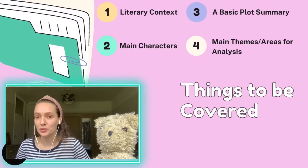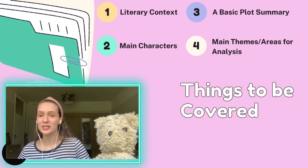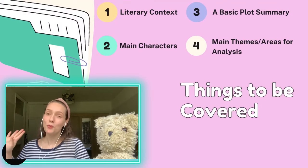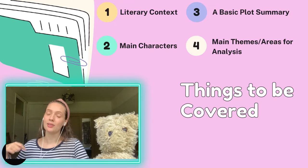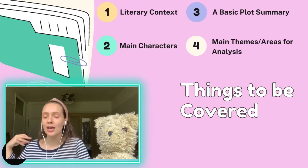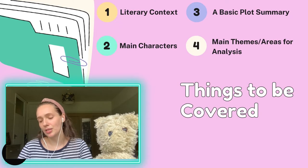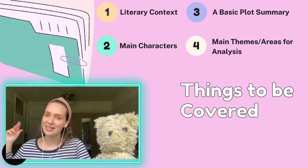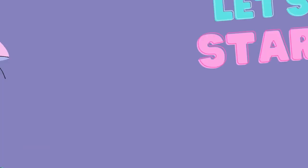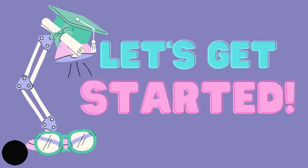I'm losing my voice already. Let's just get into it. I'm going to try and go through this as quickly as possible before I lose my voice. The four main things I'm going to go through today are the literary context, the main characters, a basic plot summary, and the main themes and areas for analysis. Let's get into Northanger Abbey by Jane Austen, which was published after she died.